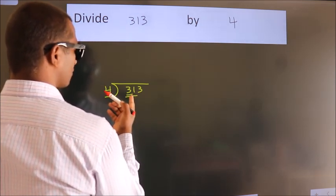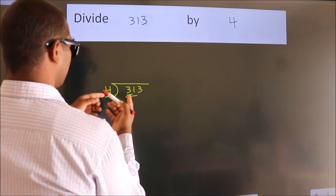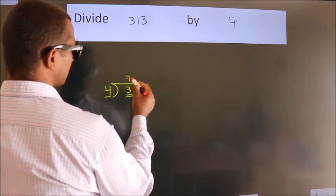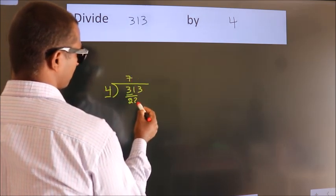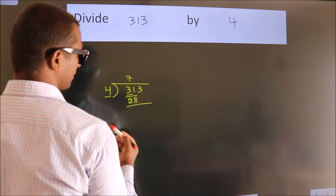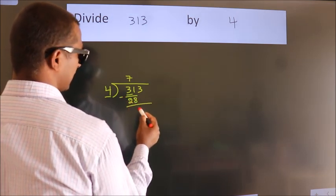A number close to 31 in 4 table is 4 7's 28. Now we should subtract. We get 3.